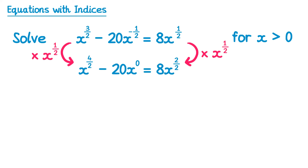Now there's some simplifying to do here. 4 over 2 is just 2, so this is x squared. And x to the power 0 is 1, so we have negative 20 times 1, which is just negative 20 — we can lose the x to the power 0 completely. Then 2 divided by 2 is 1, so this is x to the power 1, but we don't usually write the 1, so it's just 8x.